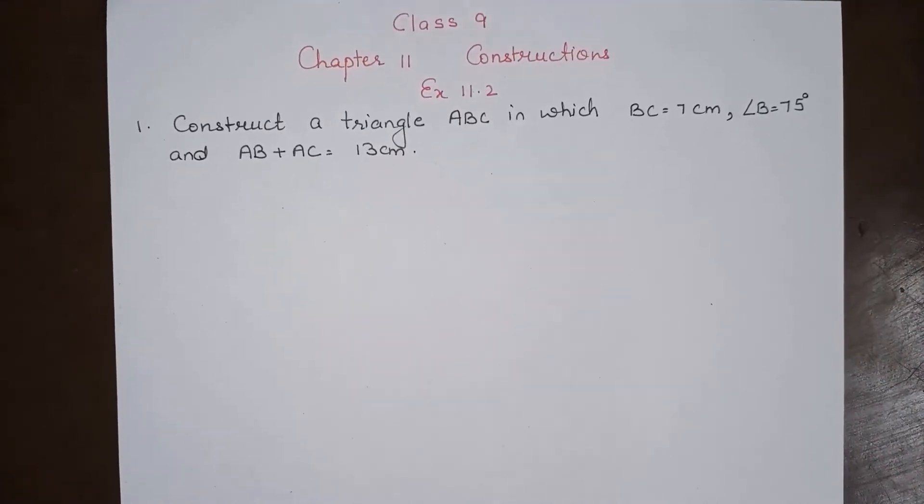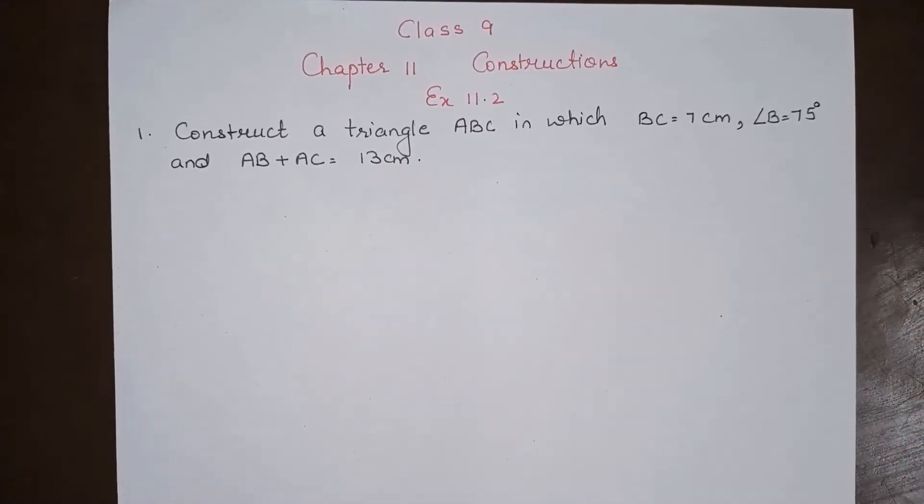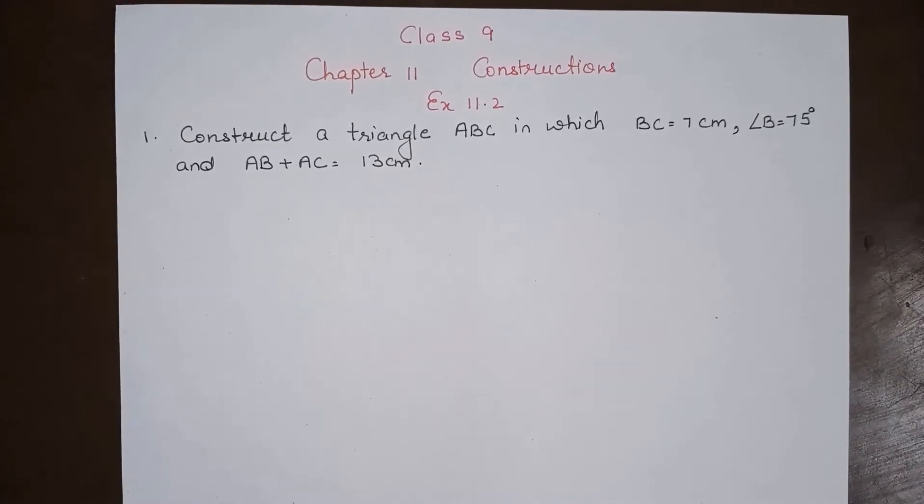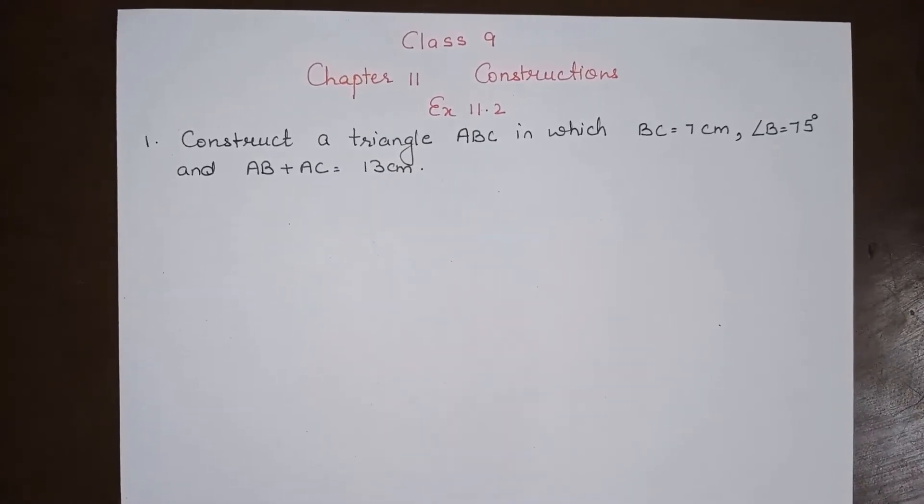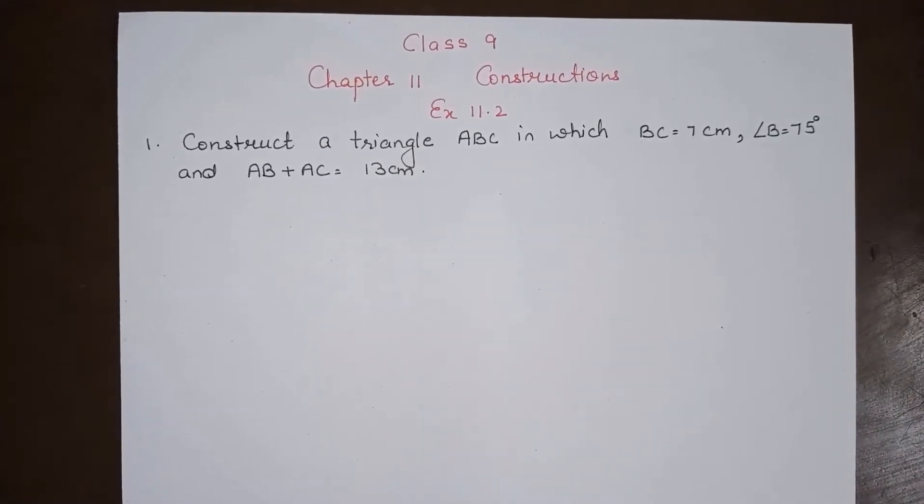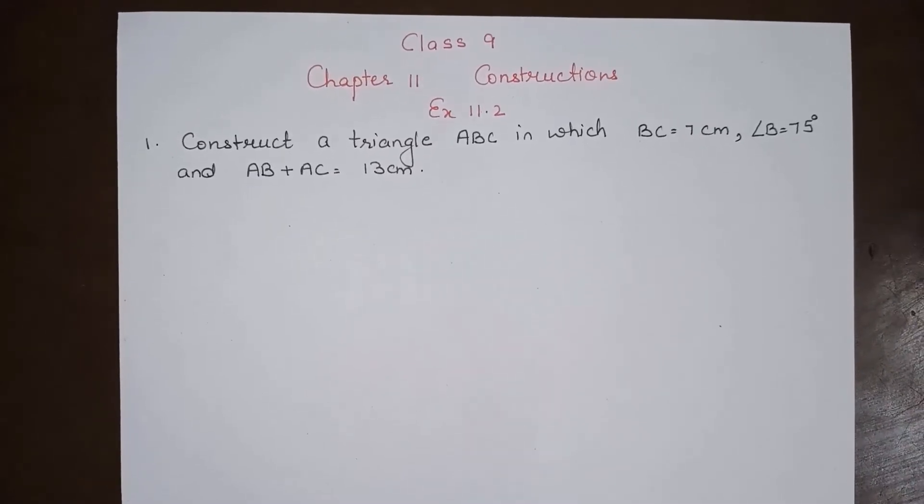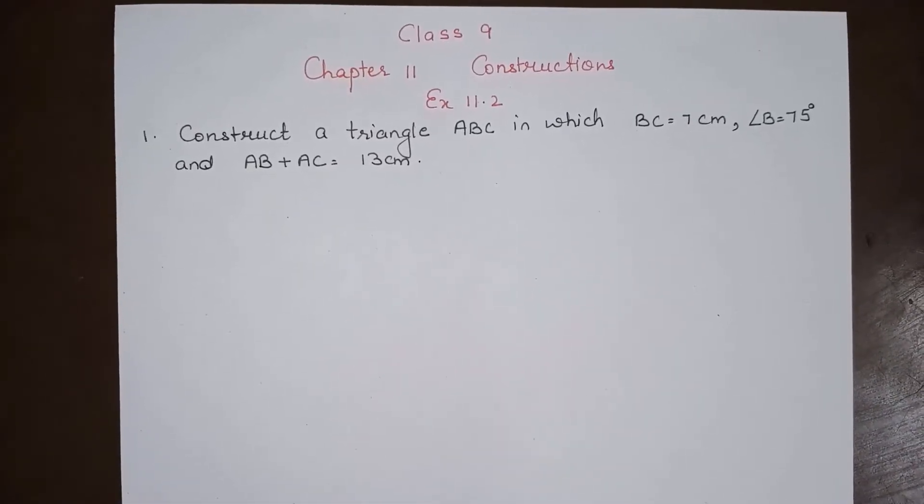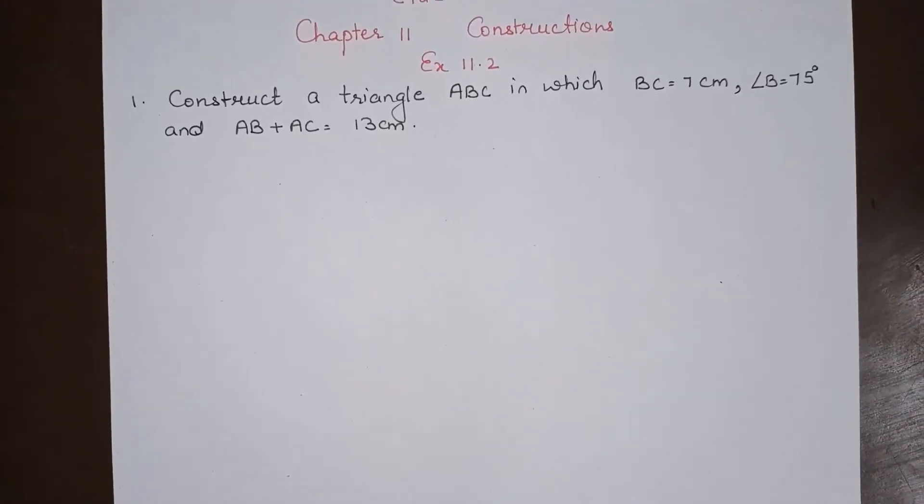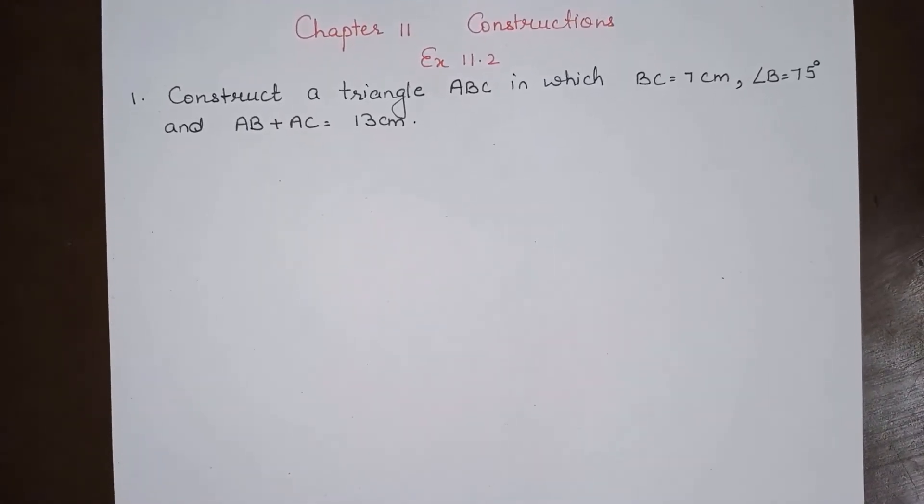Hello everyone, today we will do Class 9th Chapter 11 Constructions, Exercise 11.2, Question Number 1. Construct a triangle ABC in which BC is 7 cm, angle B is 75 degrees, and AB plus AC is 13 cm.